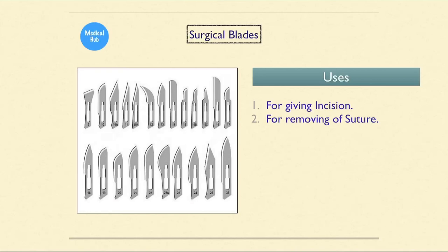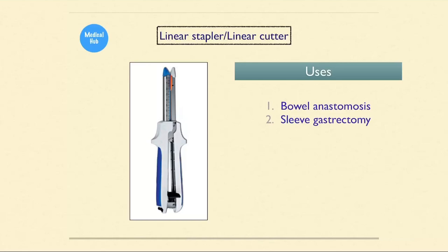We start with surgical blades, which are used for giving incisions and for removing sutures. Next is the linear stapler or linear cutter, used for bowel anastomosis and sleeve gastrectomy.